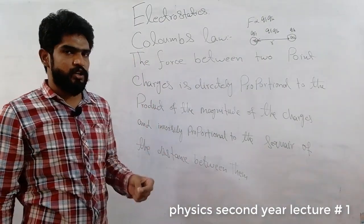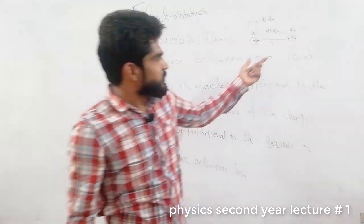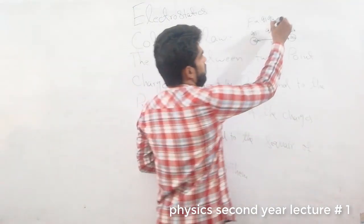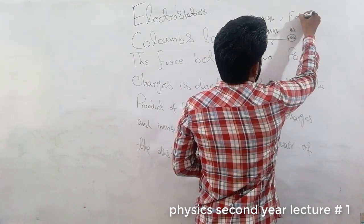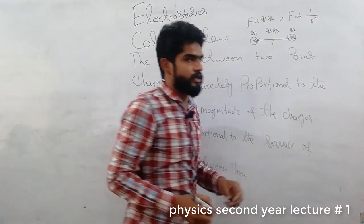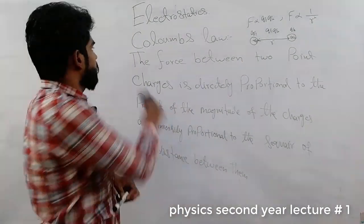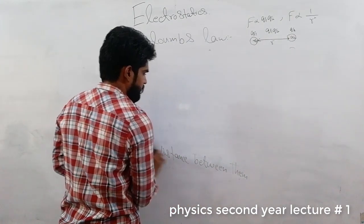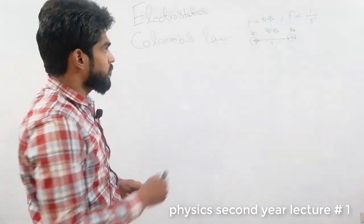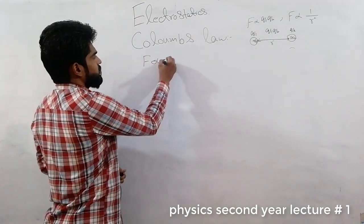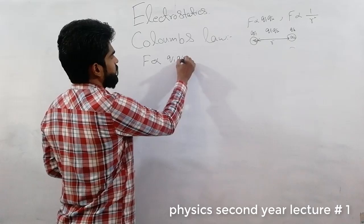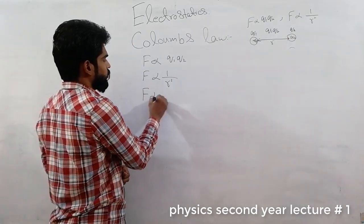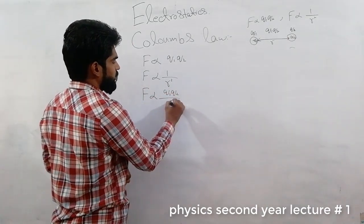Similarly, the force is inversely proportional to the square of the distance between them — force is proportional to 1 over r square. Combining both relations: force is proportional to Q1 Q2 over r square.